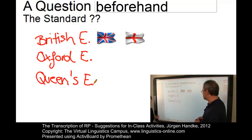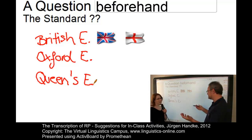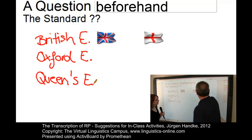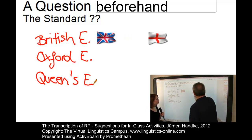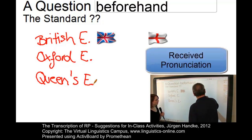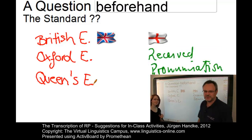Oxford English and Queen's English — well, Oxford English implies that this English is spoken in Oxford, and Queen's English implies that only the Queen uses it. So there are no suitable terms for the pronunciation of English. Rather, we should use something else, and the term that is used is, in fact, called received pronunciation.